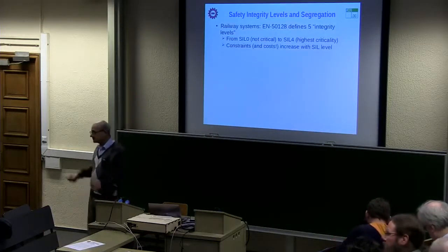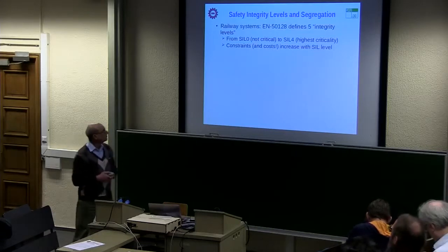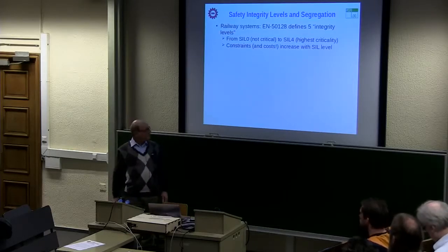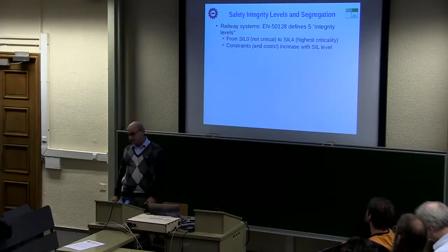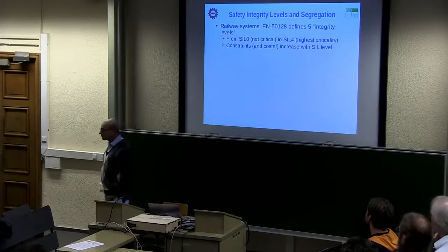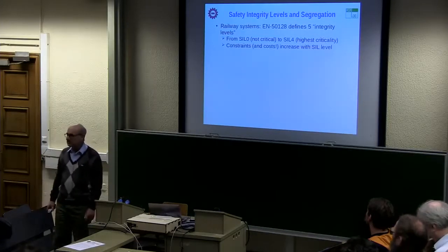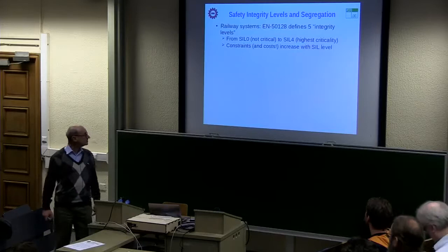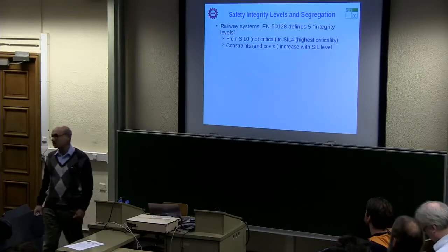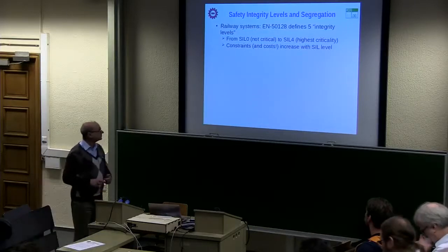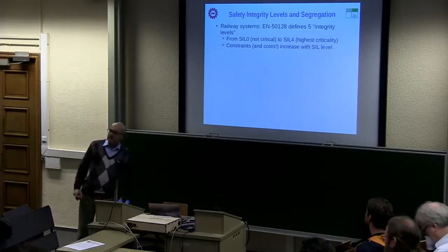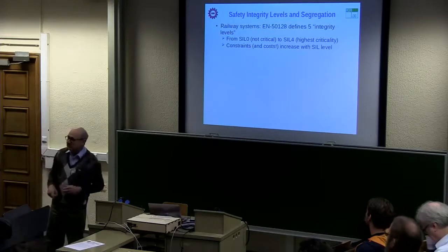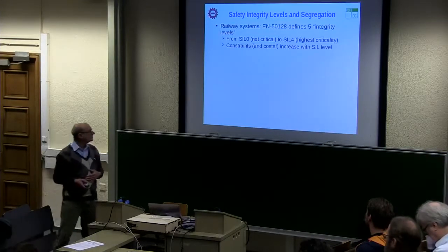You may not be familiar with railway regulations. This is governed by a standard called EN 51 28, and it defines various integrity levels. SIL 0 is when it's without safety implications, up to SIL 4, which stands for Safety Integrity Level — the highest criticality, which can result in loss of life. The constraints on software and the cost of development increases greatly between SIL 0 and SIL 4.